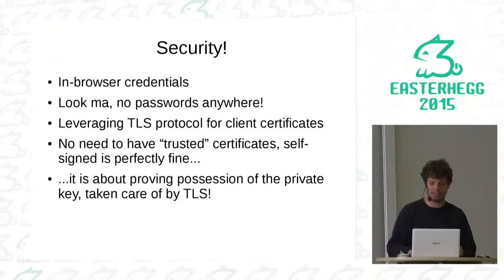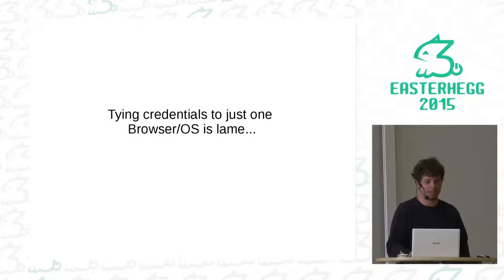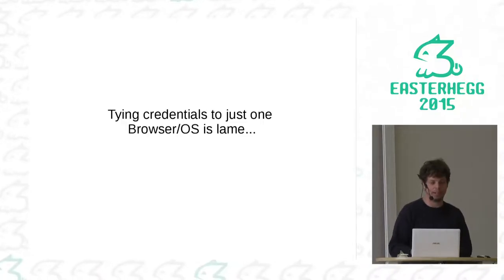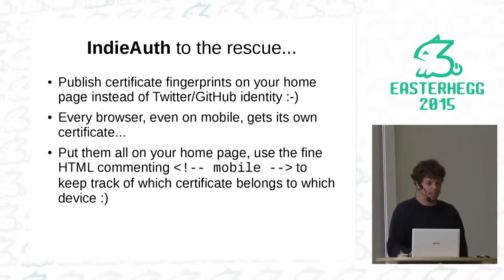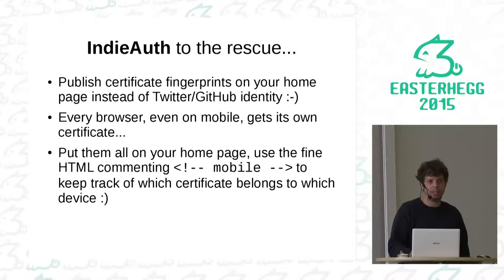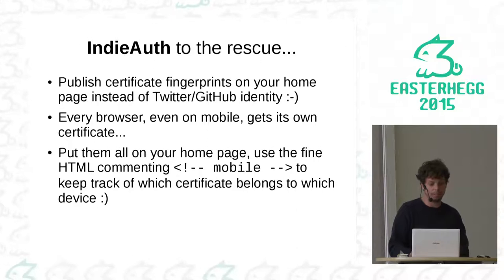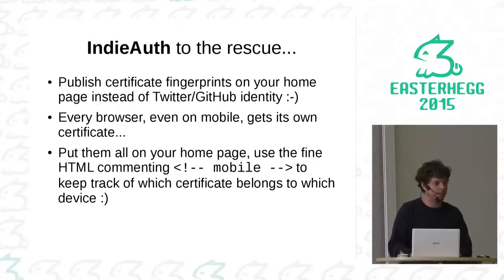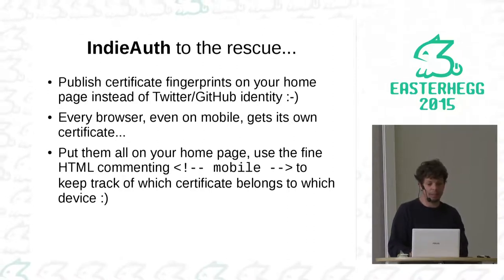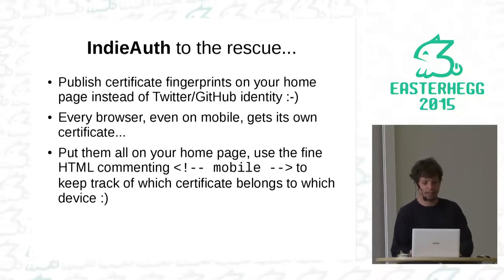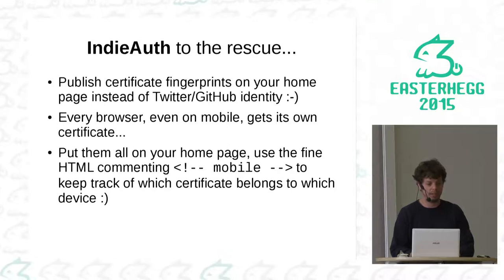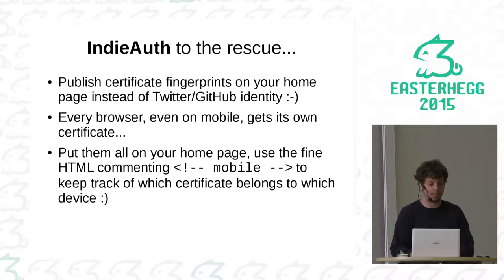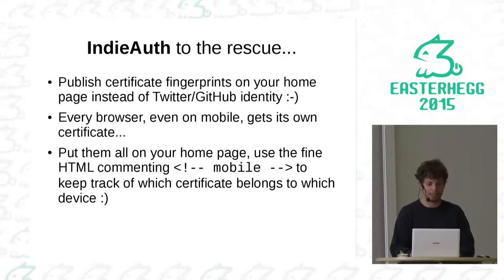TLS takes care of the proof of private key. But if you install a certificate in Firefox or Chrome, you don't have it on your mobile device, so you would have to copy the certificate to your other devices or create new credentials. Because IndieAuth supports multiple authentication sources, you can just put all fingerprints from certificates from all your devices on your homepage. So every device gets its own certificate with its own public key, and IndieCert can verify that you own the private key based on what you list on your homepage.